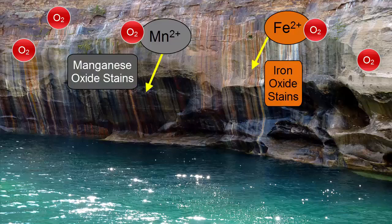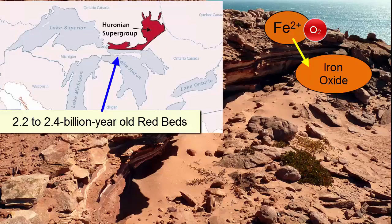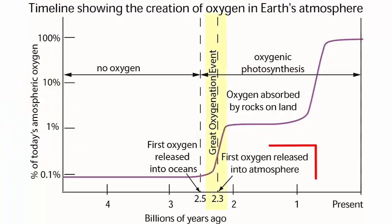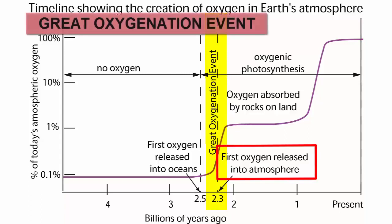The oldest evidence we find of this activity, and thus oxygen gas accumulating in our atmosphere, are from the north shore of Lake Huron, Ontario, Canada. Threadbeds, iron oxide-rich rocks formed on Earth's surface, dated between 2.2 and 2.4 billion years old. We call this period of time, about 2.3 billion years ago, when oxygen gas began to accumulate in the atmosphere for the first time in amounts as large as 1% of current values, the Great Oxygenation Event.